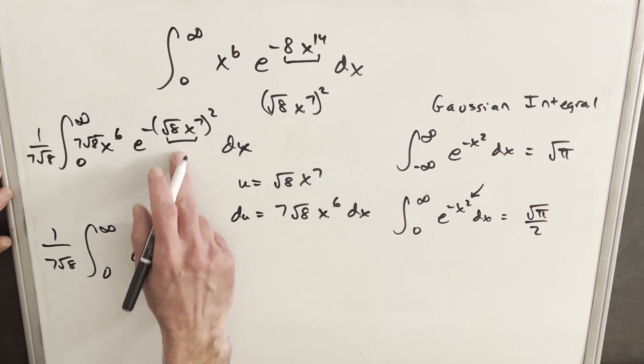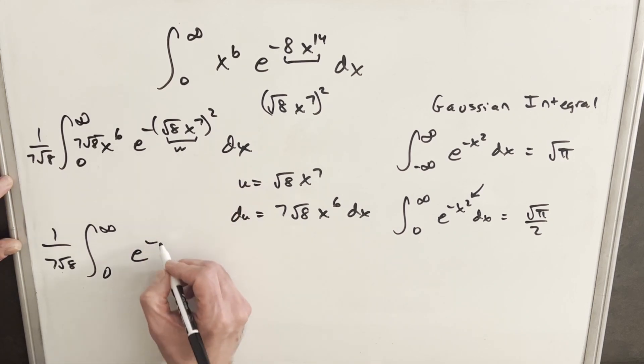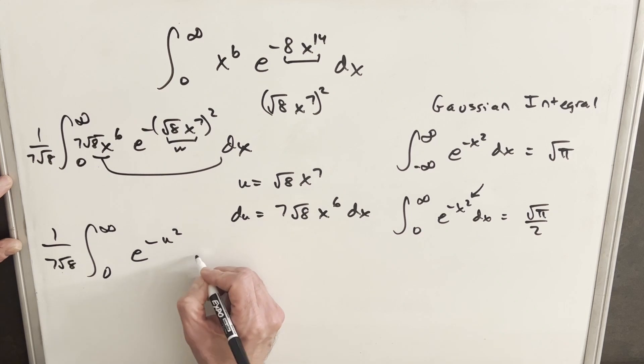We'll have our e. This was our u. So we're going to have e to the minus u squared. And then this with this is just our du.